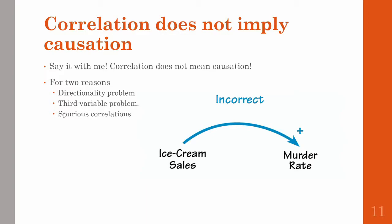There's also the third variable problem. Two variables could be related not because A causes B or B causes A, but because an entirely different variable causes both A and B. A good example is that ice cream sales are correlated with murder rates — and this is actually true. The more ice cream that is sold, the more murders there happen to be. But this doesn't mean that ice cream sales cause murder rates to go up. Pause the video and see if you can think of a third variable that could explain this correlation.